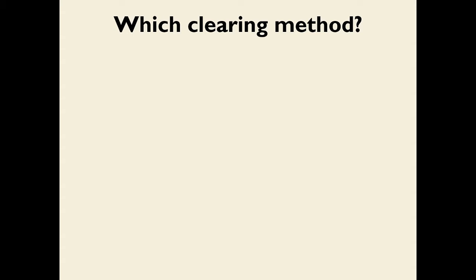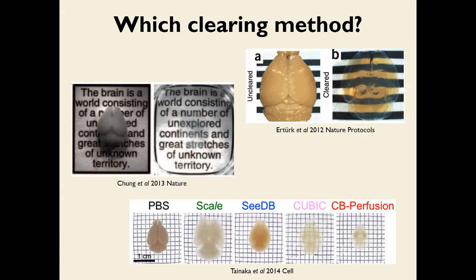There has been an explosion of clearing methods in the last 15 years or so, with different families based on different chemistries. The original papers always have a 'magic trick' figure showing an organ before and after clearing — and voila, after clearing you can actually see through the organ. Some methods are based on hydrogel modifications, others are based on organic solvents that dehydrate the sample and remove all the lipids, and others are based on cocktails of urea and detergent like the CUBIC methods.